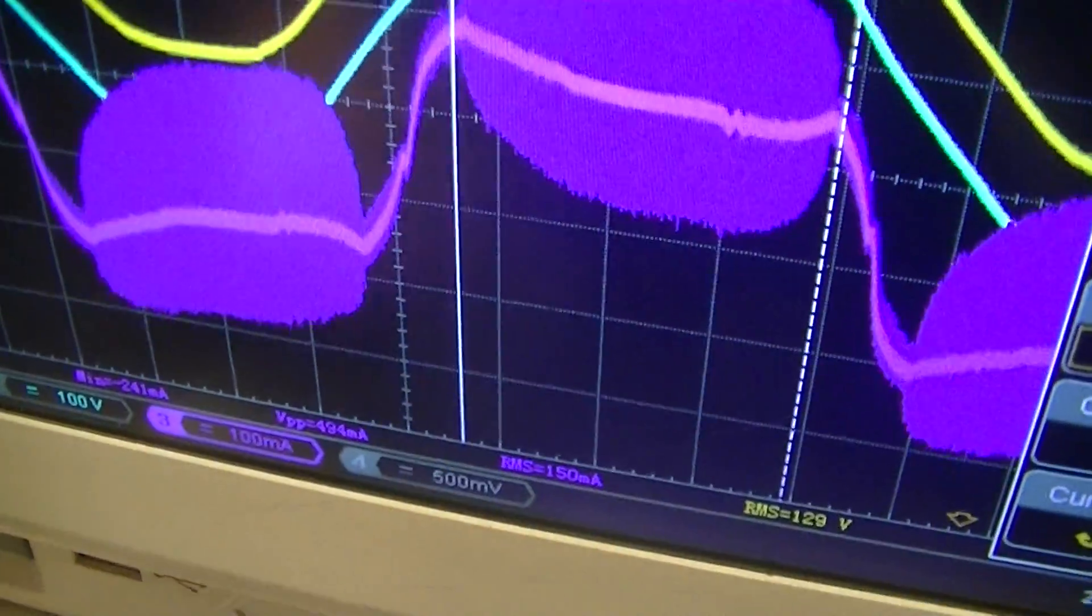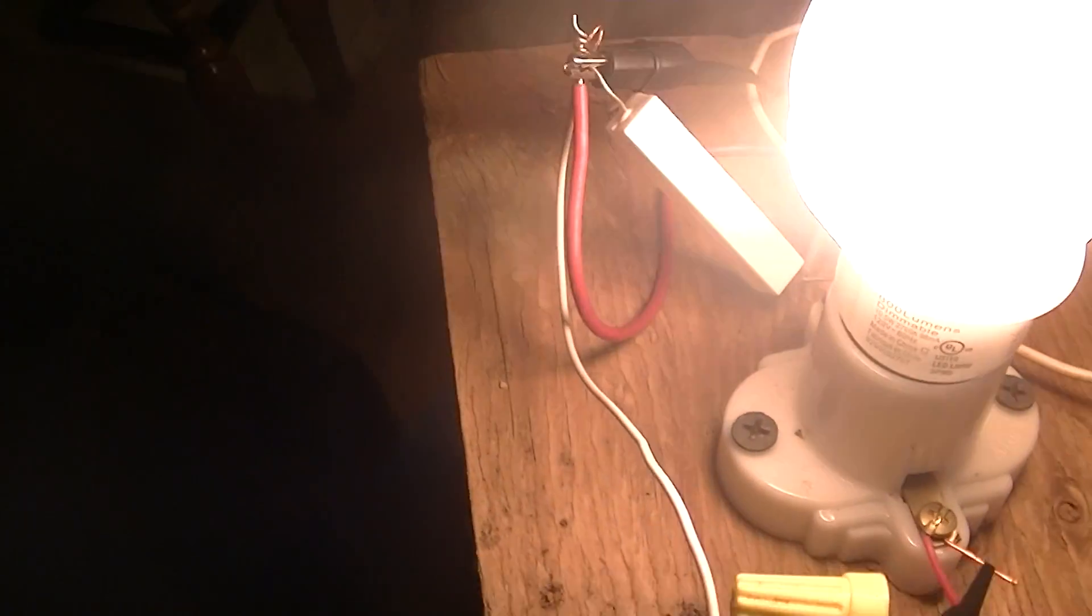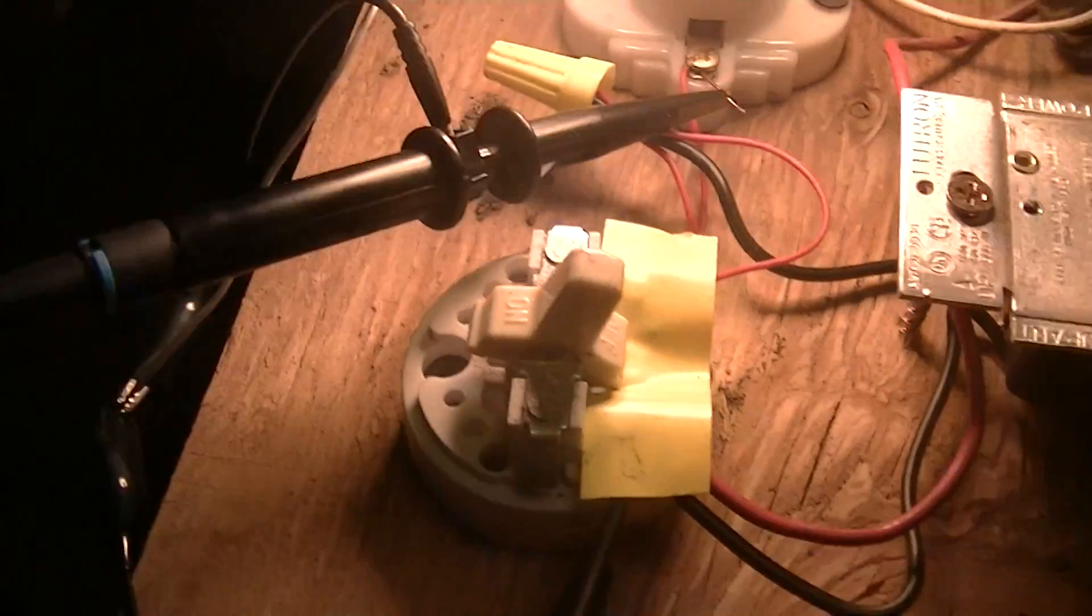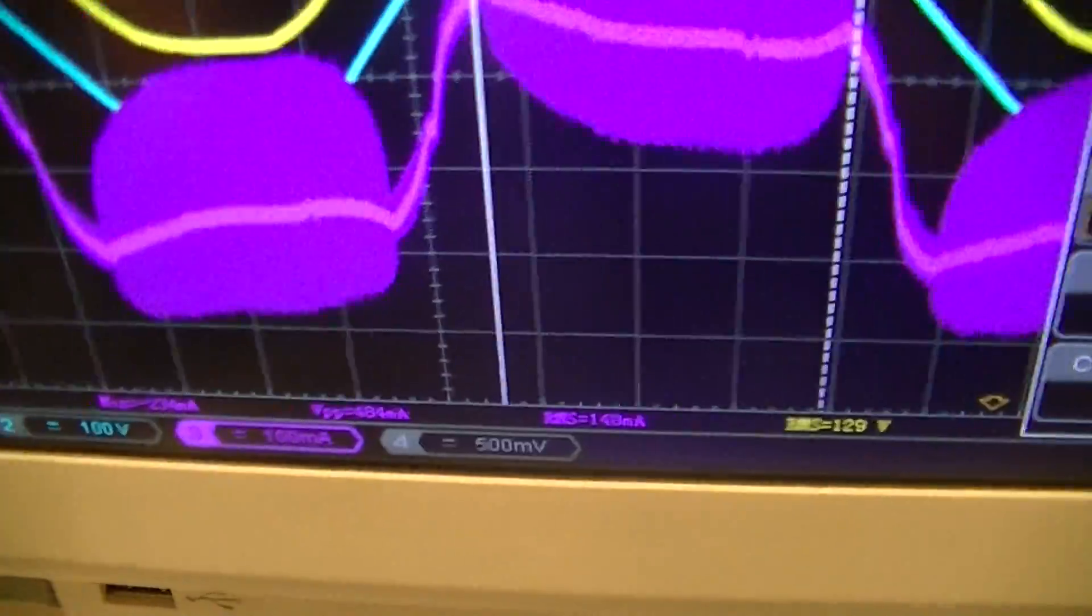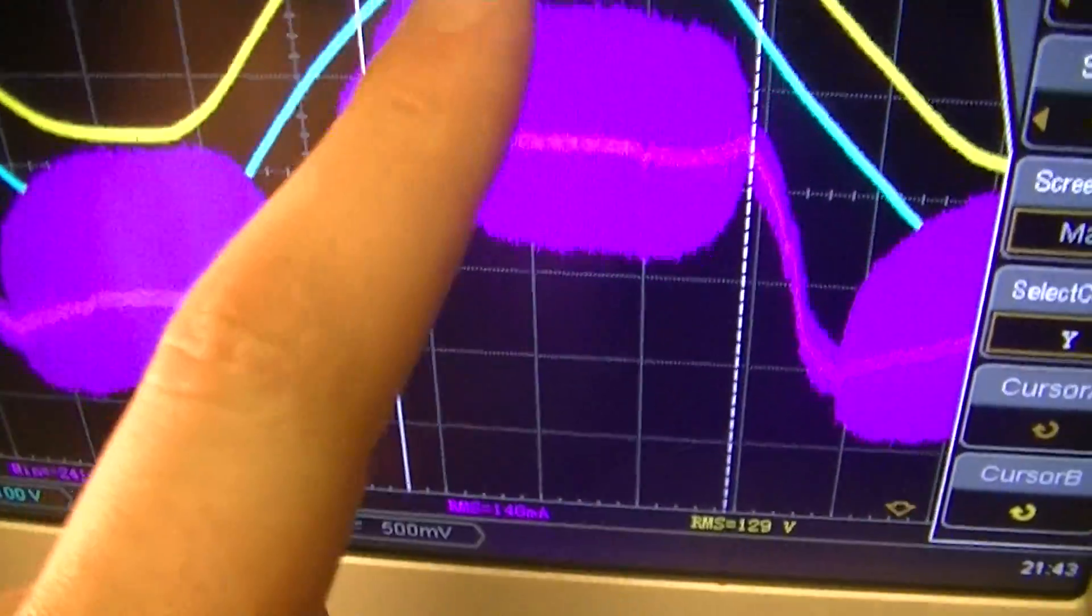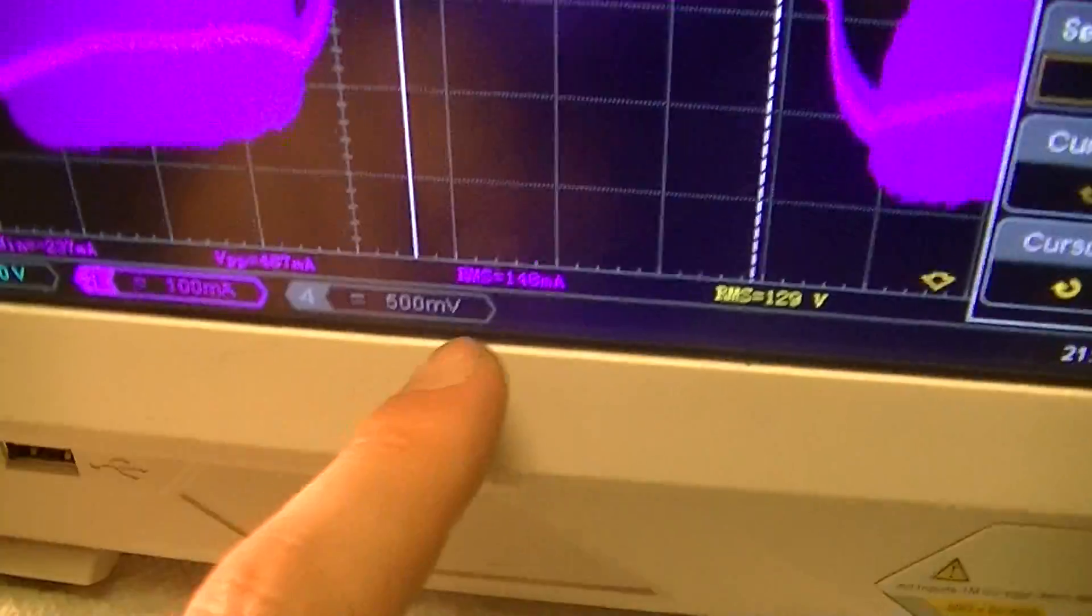The blue trace is potential after the dimmer. And purple is operating current measured through a one-ohm current shunt. Right there is that white cylinder. Er, er, rectangular thingamajig. Anyways, current, again, fairly noisy as is typical.